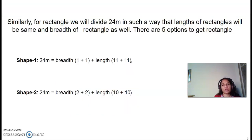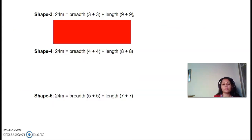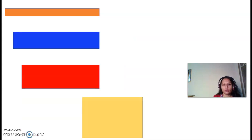Similarly, for rectangle, we will divide 24 meters in such a way that the length of the rectangles will be different and breadth of the rectangle as well. So, there are 5 options. Let's have a look at the options. Shape number 1 will be, with the same perimeter 24 meters, breadth will be 1 and length will be 11. Shape number 2 will be a rectangle with breadth 2 and length 10. Shape number 3 will be like this, with breadth 3 and length 9. Shape number 5 will be like this, with breadth 5 and length 7. And, the last shape will be like this, breadth 4 and length 8. So, here we have all of our rectangles or the square that we have got.